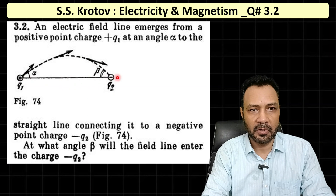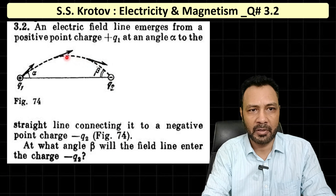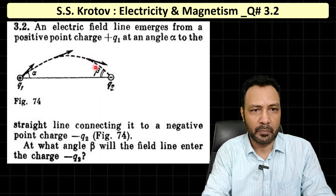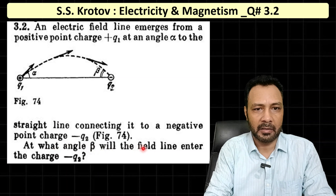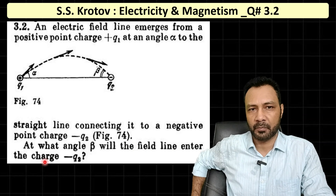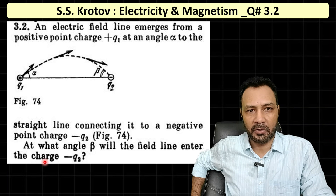There is a line joining q1 and q2, and one electric field line coming from q1 is at an angle alpha from the line joining q1 and q2. The same field line enters at -q2 making an angle beta from that line. We have to find at what angle beta the field line enters the charge -q2. To find the answer, I will need to introduce the concept of the solid angle.